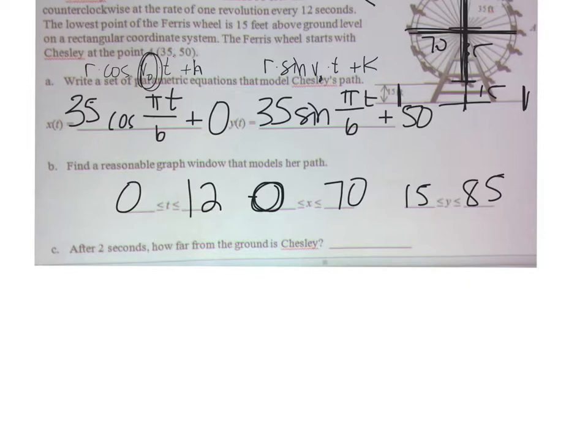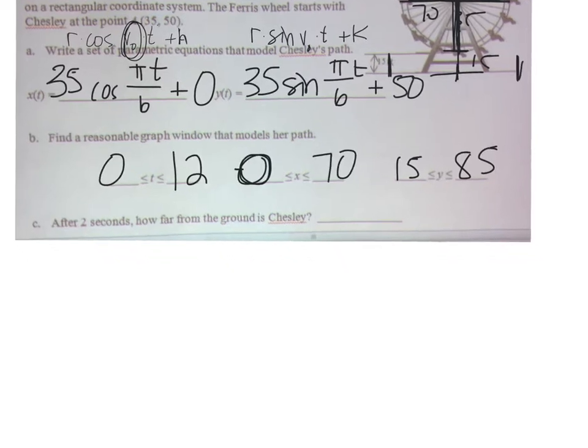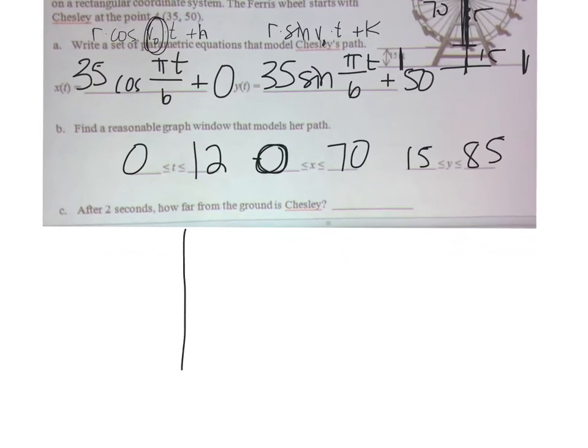So when I put these equations in my calculator, I had -35 to positive 35 as the x part, and then up to 85 in the y, and I got a graph that looked like this.